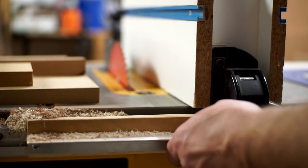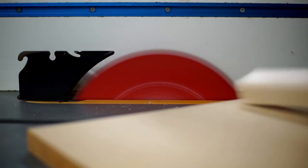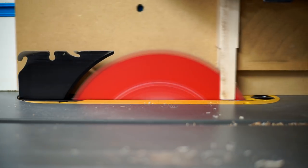These toggle clamps worked really well for holding the handles tightly against the jigs. It also allowed me to switch out the material quickly so I could batch these things out.